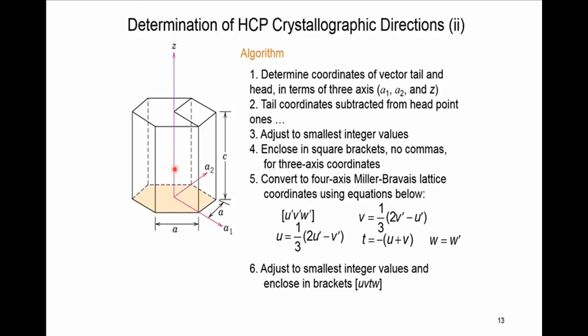In the second step, we subtract the tail-point coordinates from the head-point coordinates and normalize by unit cell dimensions — here a along a1/a2, and c along z. The third step is adjusting to the smallest integer value: we exclude 0, find the smallest value among the rest, and multiply so that the smallest value becomes 1. The rest will be larger than 1. We enclose these values as u prime, v prime, and w.